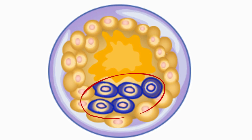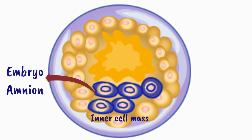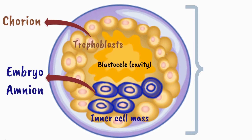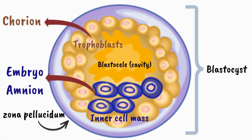Five inner cells differentiate to form the inner cell mass, which will give rise to the embryo and the amnion. The inner cell mass is surrounded by 53 outer cells, which are trophoblasts. These will give rise to part of the chorion. The trophoblasts cavitate to form the blastocele. This entire structure of the inner cell mass, trophoblasts, and blastocele is the blastocyst, and surrounding the entire blastocyst is the zona pellucida.